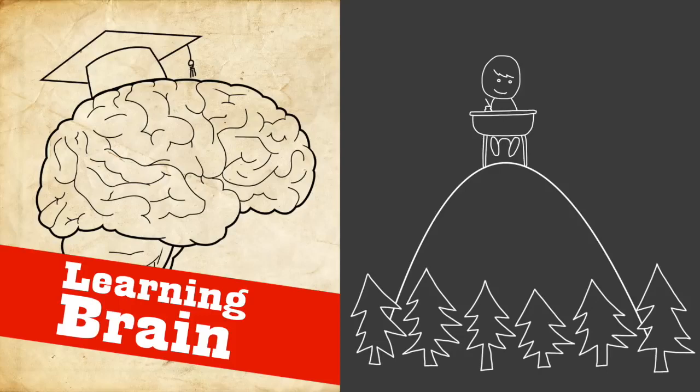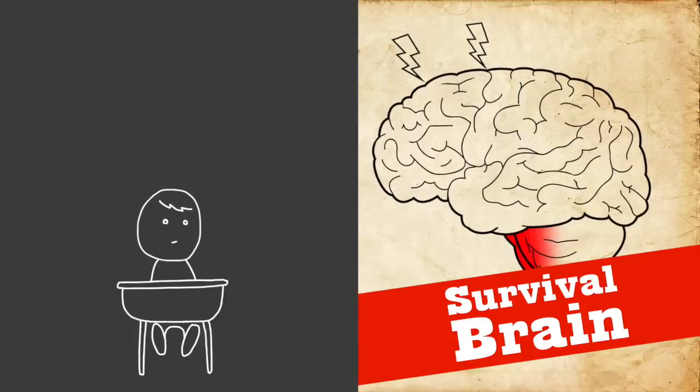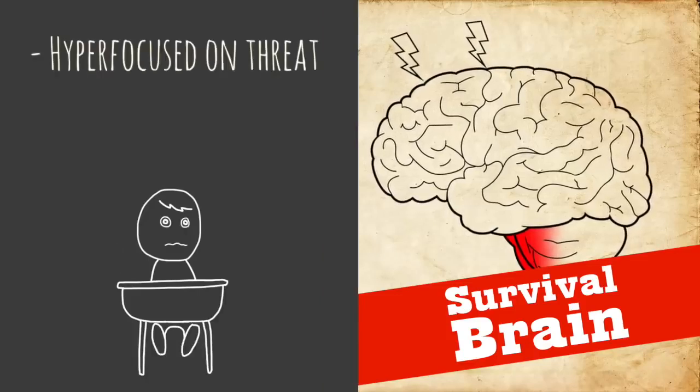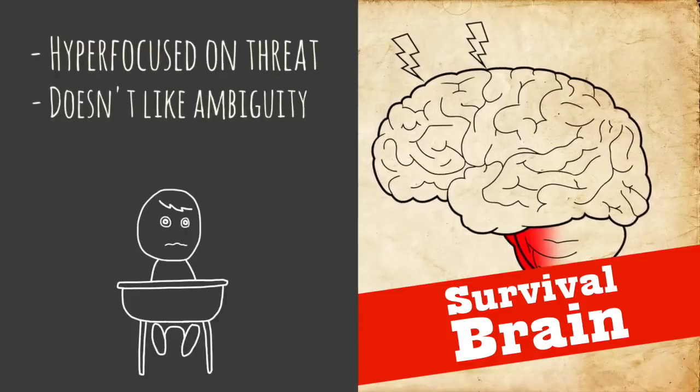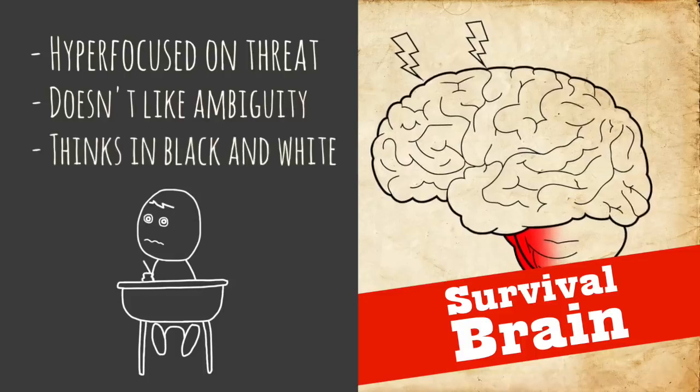Now survival brain on the other hand is completely different. It's hyper-focused on threat. It doesn't like ambiguity. It wants clear hard facts. It thinks in black and white terms. It doesn't want anything to be gray at all.